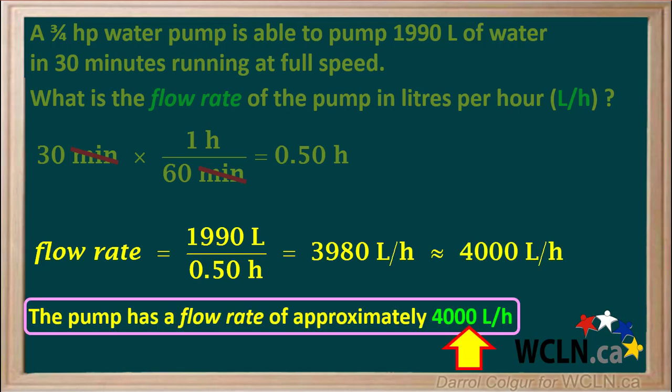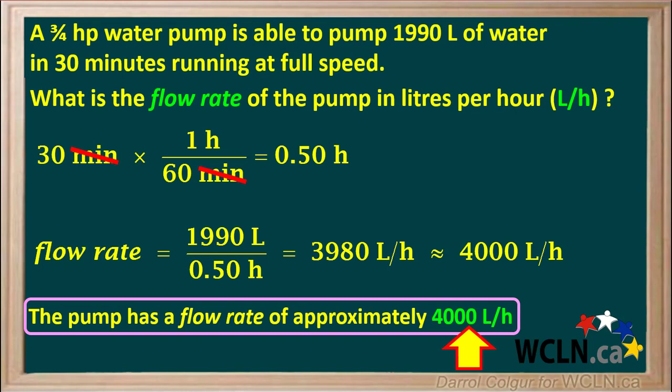So we can state that our pump has a maximum flow rate of approximately 4,000 liters per hour. Here is the full solution to the problem all on one page — it would be good to go through it step by step and make sure it makes sense to you. Notice how we used dimensional analysis, or manipulation of units, to help set this solution up.